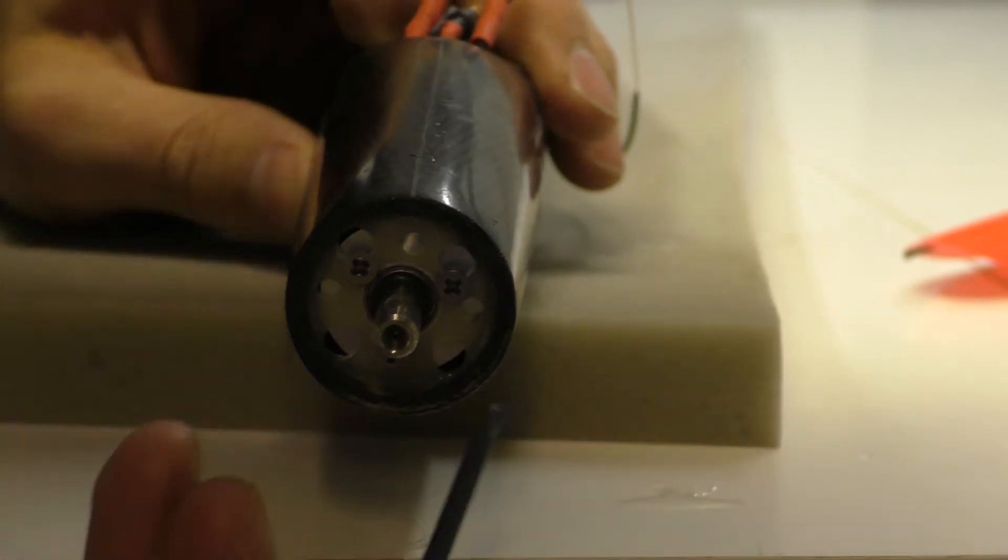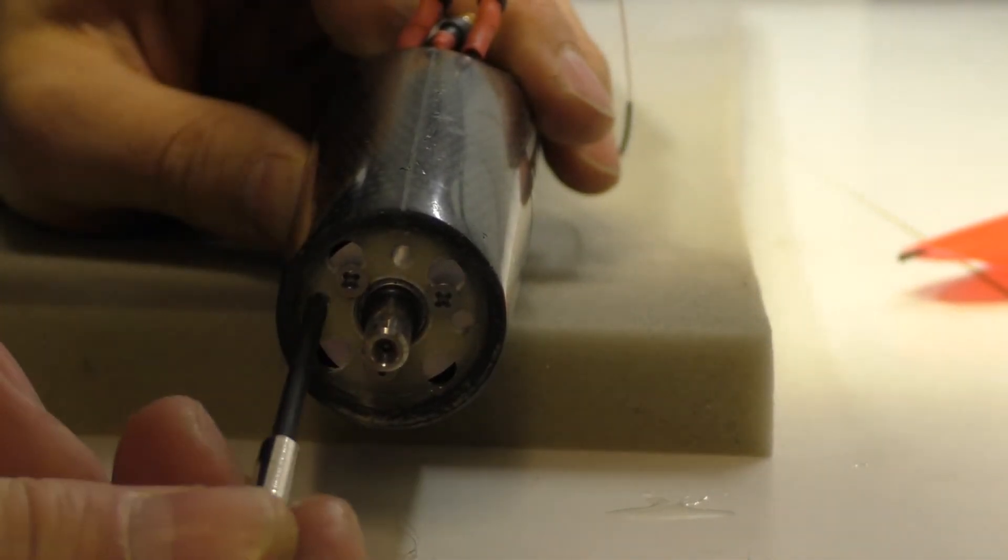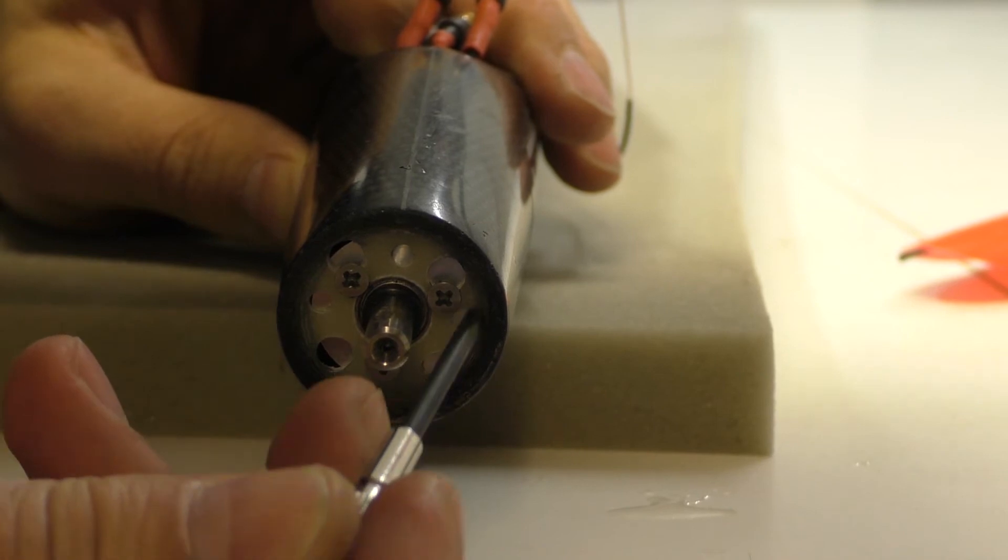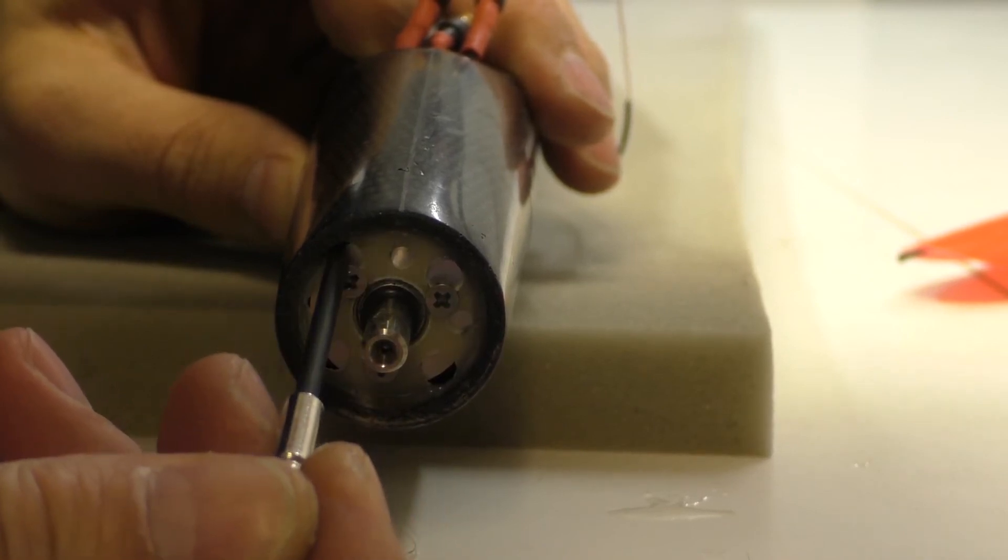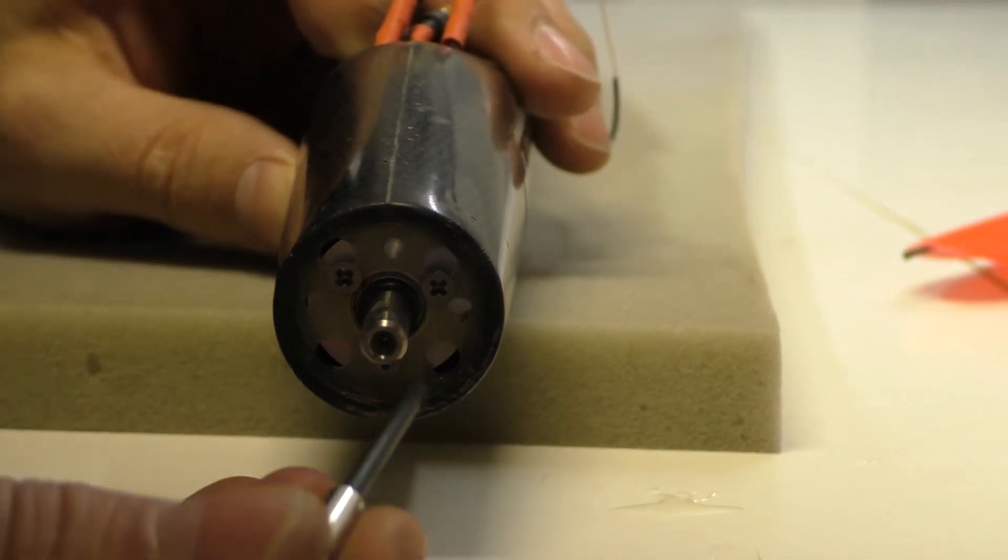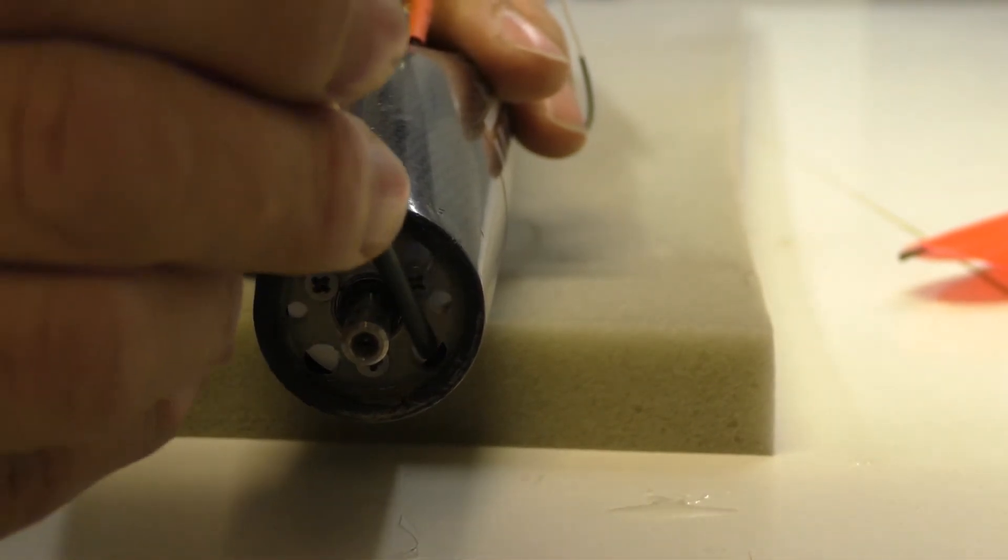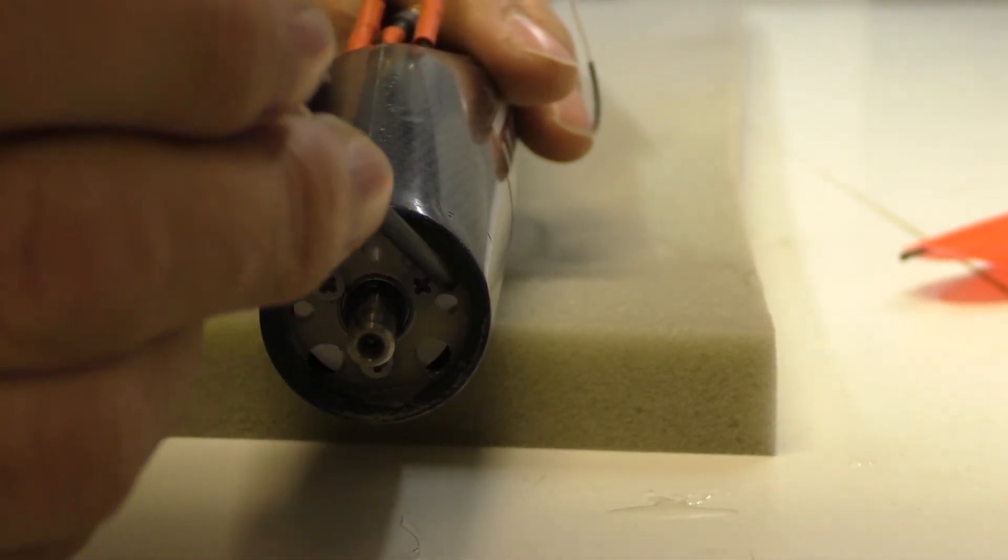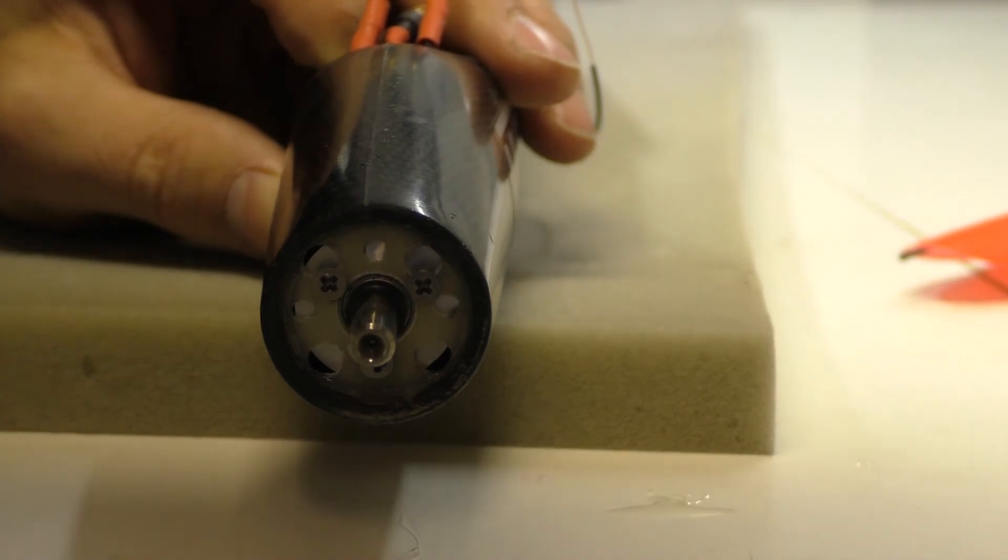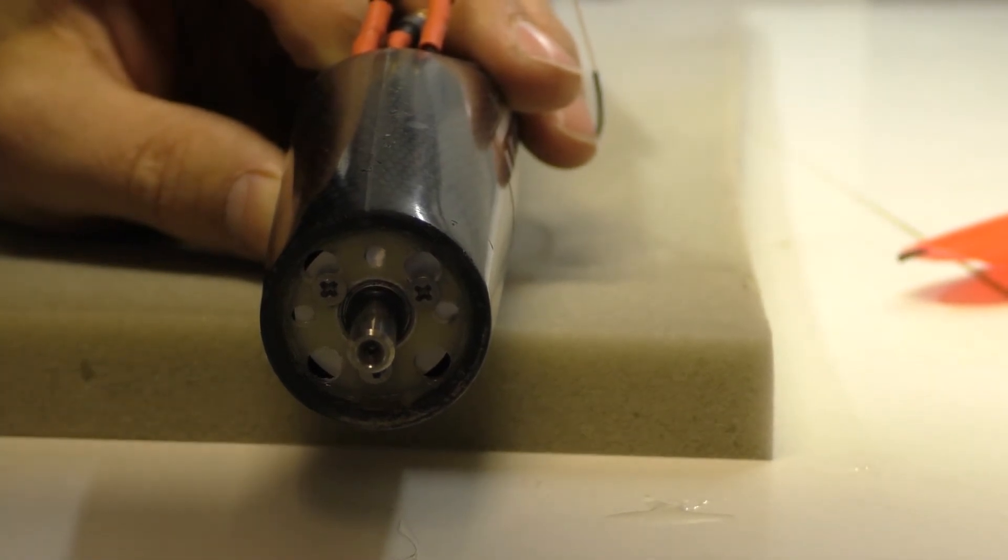So now what I need to still do is around the rim, I need to open up more ventilation space because it is only through the small gap here that the motor will get ventilation. It certainly will need to get air.